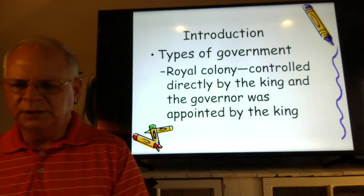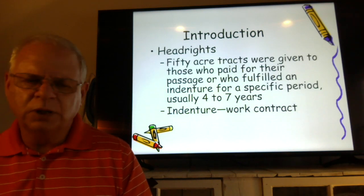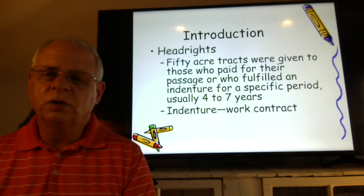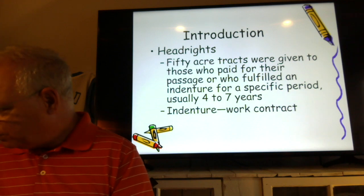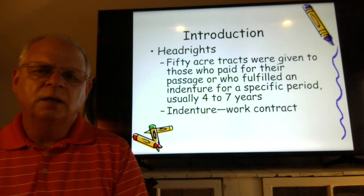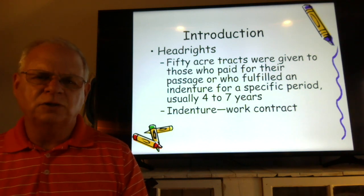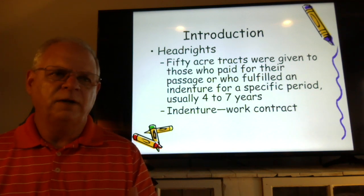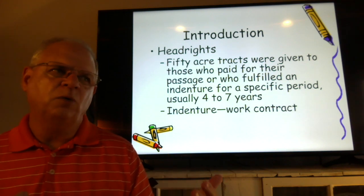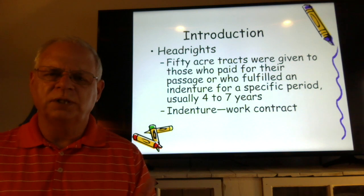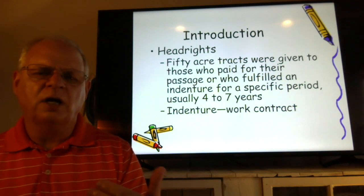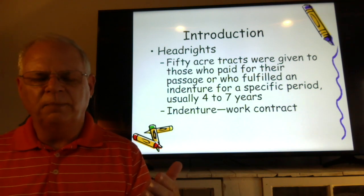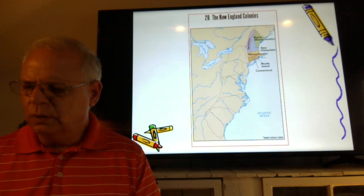To get people to come — since the patroon system from chapter 1 didn't work — there was the idea of head rights. There were 50-acre tracts given to those who paid for their passage. If you couldn't afford passage, you'd go and work it off in four to seven years, then receive land, tools, and seed to start your own farm. This work contract was called being indentured — you were an indentured servant for the specified period of time.